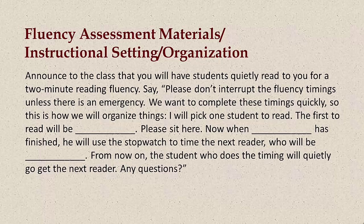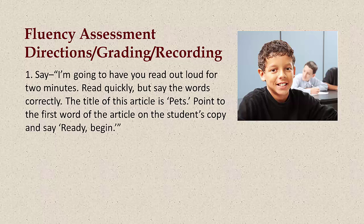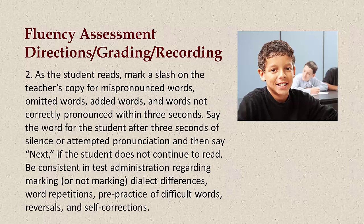Here's your script to administer the PETS fluency assessment. Step 1: Say, I'm going to have you read out loud for two minutes. Read quickly, but say the words correctly. The title of this article is PETS. Point to the first word of the article on the student's copy and say, ready, begin. Step 2: As the student reads, mark a slash on the teacher's copy for mispronounced words, omitted words, added words, and words not correctly pronounced within three seconds. Tell the student the word after three seconds and say next if the student does not continue. Be consistent regarding marking dialect differences, word repetitions, pre-practice of difficult words, reversals, and self-corrections.